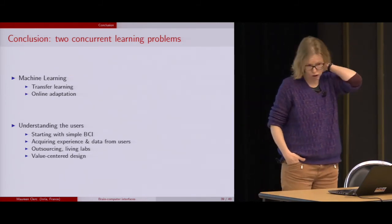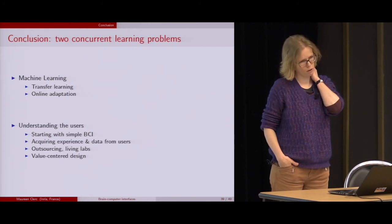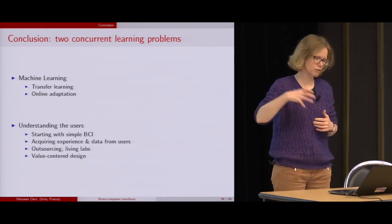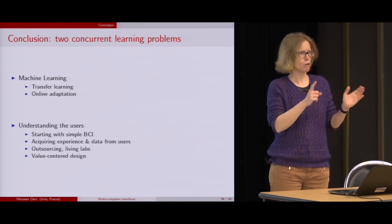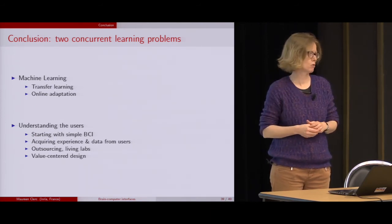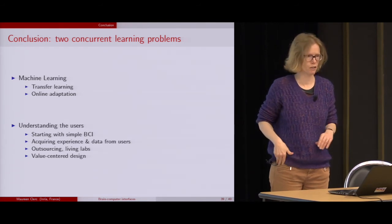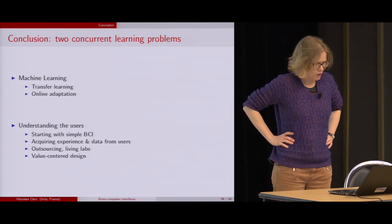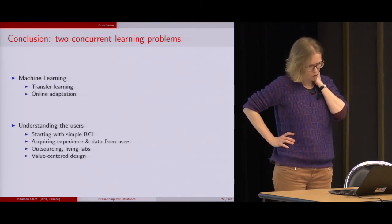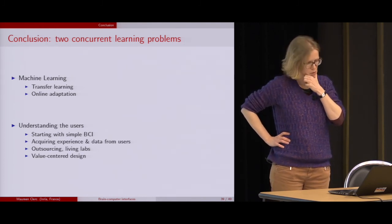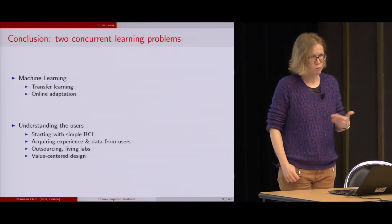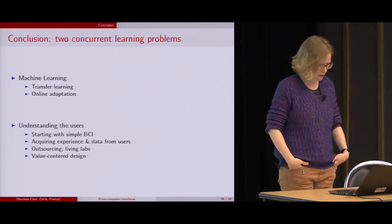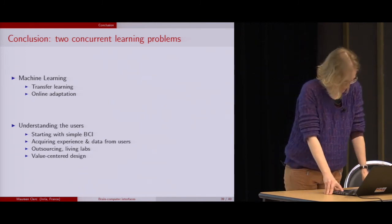In conclusion, the machine learning problems at the moment for brain-computer interfaces include the transfer of information from one dataset to a new dataset — there were five minutes spent by the subject just to have labels during calibration, which is annoying. There's a problem of online adaptation still to be solved in practice. But one of the maybe bigger problems is getting users to actually use these things — acquiring more and more experience and data with users, having living labs, and designing systems so that people can benefit from them.